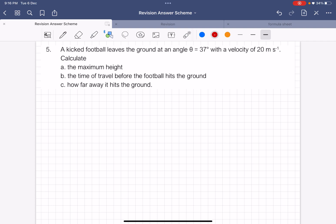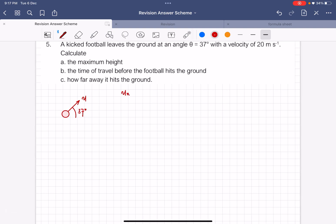So this is the football, and it leaves the ground at an angle of 37 degrees. This is U. Whenever your exam question is something like this at an angle, you have to extract the initial velocity into its x and y components. Firstly, we extract the x component: Ux equals 20 cos 37 degrees. Next one is Uy equals 20 sin 37 degrees.